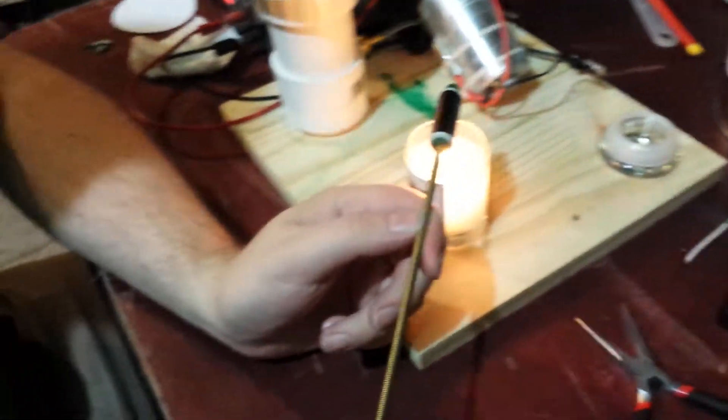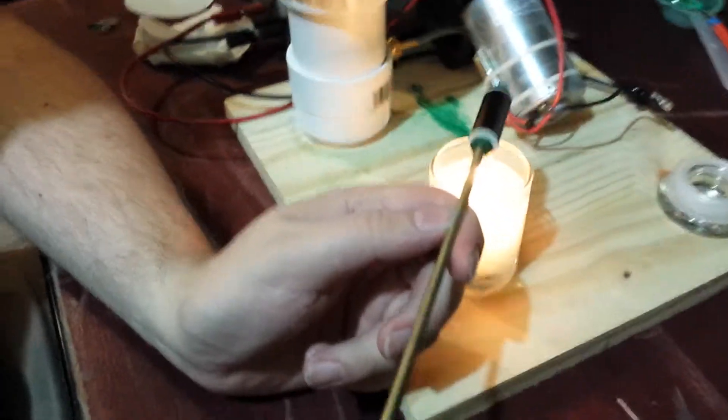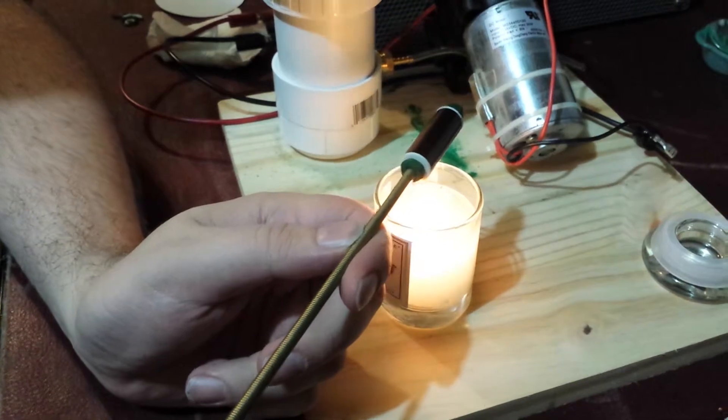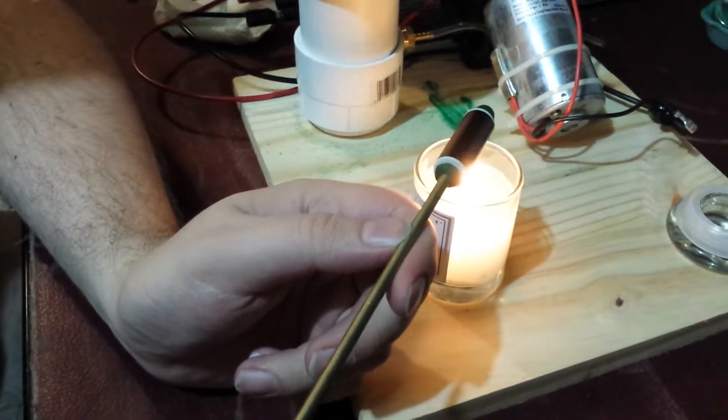So here we have a flashlight casing. We're on the middle of the flashlight and we're just going to try using the fluidized bed to coat this with some green powder coat. I'm heating it up with just a candle here.